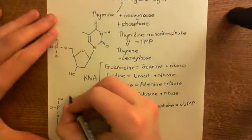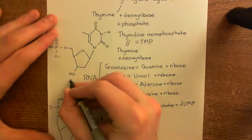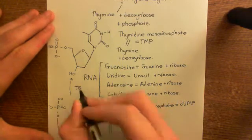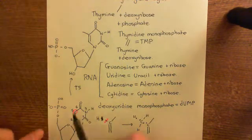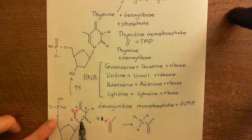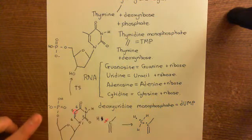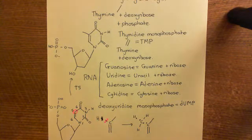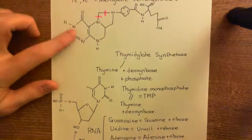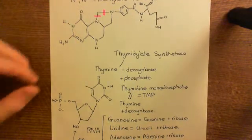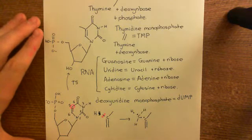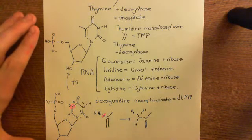So the enzyme thymidylate synthase, or TS for short, is going to catalyze the conversion of deoxyuridine monophosphate into thymidine monophosphate. And in so doing, it will also convert N5,N10-methylene tetrahydrofolate back into dihydrofolate. That's what this thymidylate synthase enzyme is doing.